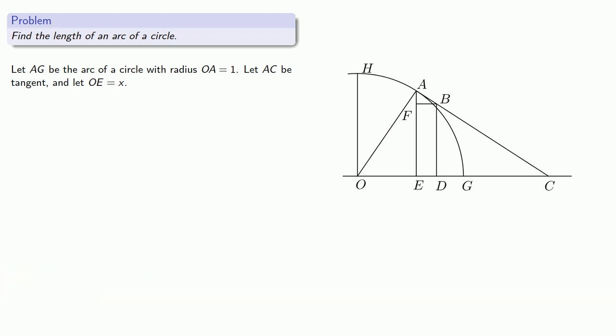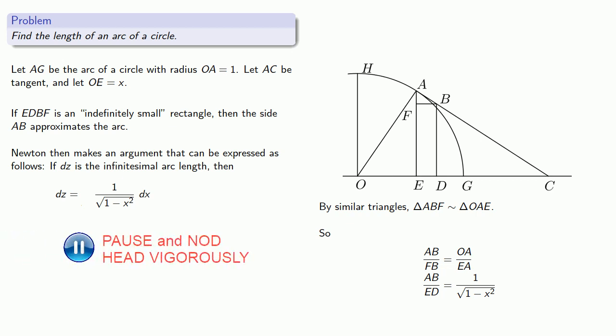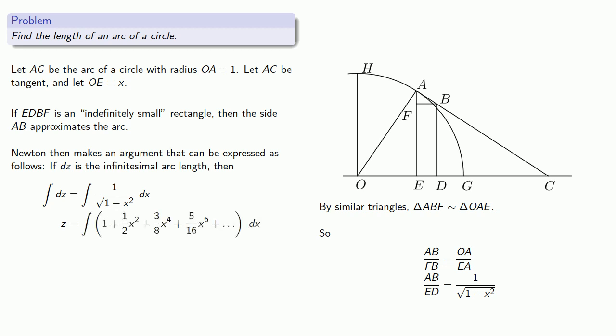Now, if EDBF is an indefinitely small rectangle, then the side AB approximates the arc that sits below it. And then Newton makes an argument that we can express as follows. If dz is this small segment of the arc, then we know that it's equal to one over square root one minus x squared. Adding up all of those arc lengths will give us the arc length itself. And we can find the area on the right-hand side by expanding out an infinite series, and doing term-by-term integration.